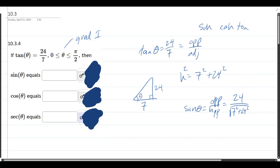Secant is one over cosine. So it's the reciprocal of cosine. So it's hypotenuse over adjacent. And remember, hypotenuse is the square root. 7 squared plus 24 squared. And adjacent is going to be the 7.